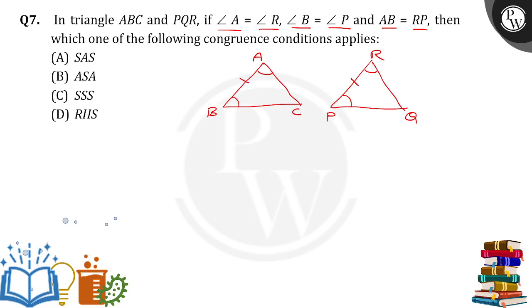Okay, so this angle A is equal to angle R, AB is equal to RP, angle B is equal to angle P. This is an angle-side-angle.